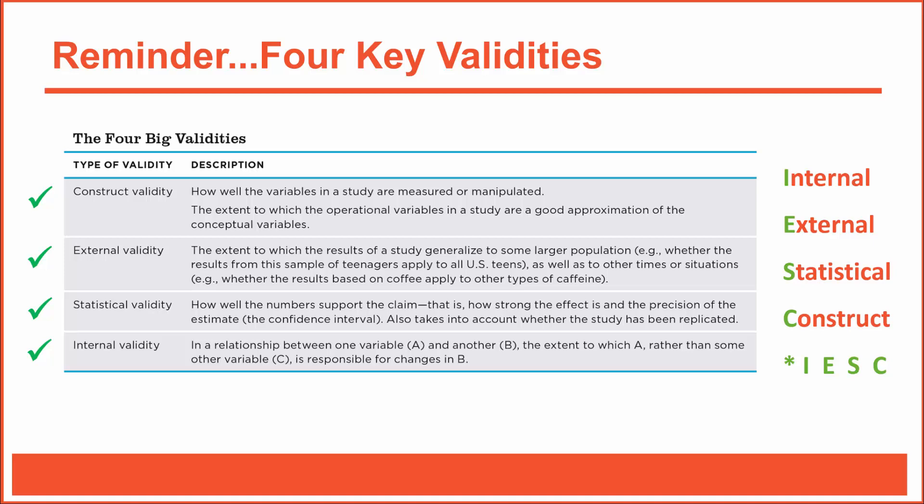It's easy to remember internal and external — that's I and E — and from there you remember the letters SC, which prompts your brain to recall statistical and construct validities. So when I think about the four key validities I always think I-E-S-C. All right, let's go ahead and discuss how to interrogate frequency claims.